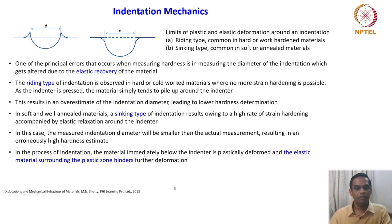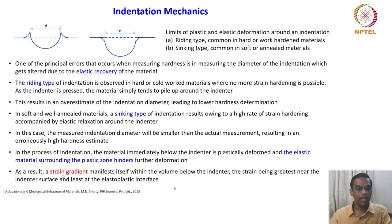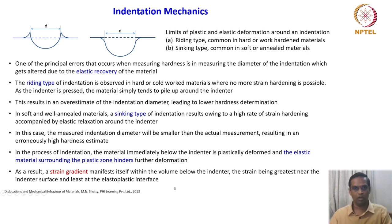In the process of indentation, the material immediately below the indentor is plastically deformed and the elastic material surrounding the plastic zone hinders further deformation. As a result, a strain gradient manifests itself within the volume below the indentor — the strain being greatest near the indentor surface and least at the elasto-plastic interface. Indentation mechanics clearly shows that a strain gradient exists in every impression; this is the primary information to keep in mind.